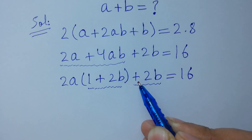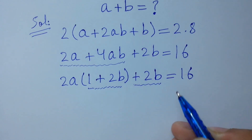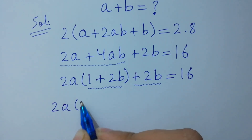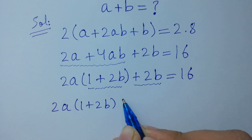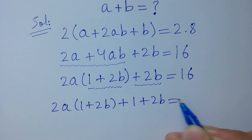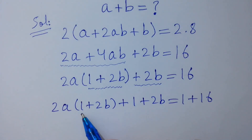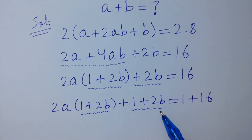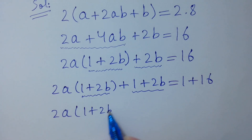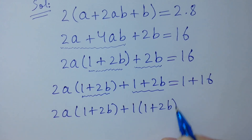We need a (1 plus 2√b) factor here, so add 1 on both sides. We get 2√a(1 plus 2√b) plus 1·(1 plus 2√b) is equal to 1 plus 16.